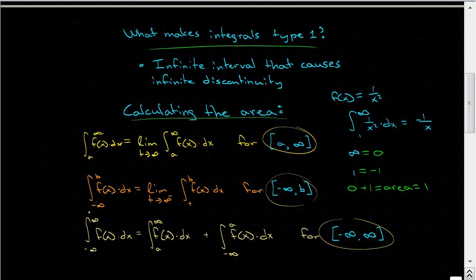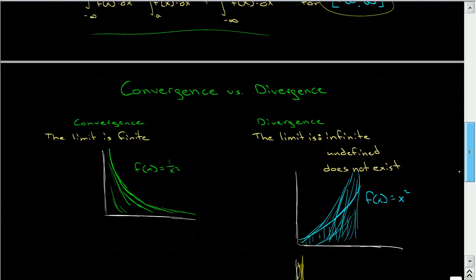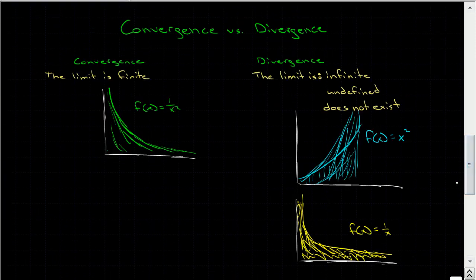If we had negative infinity to b, it's the same — we write it as the limit as t approaches negative infinity of the integral from t to b of f of x dx. Now we get into something called convergence and divergence. Convergence means the limit is finite.